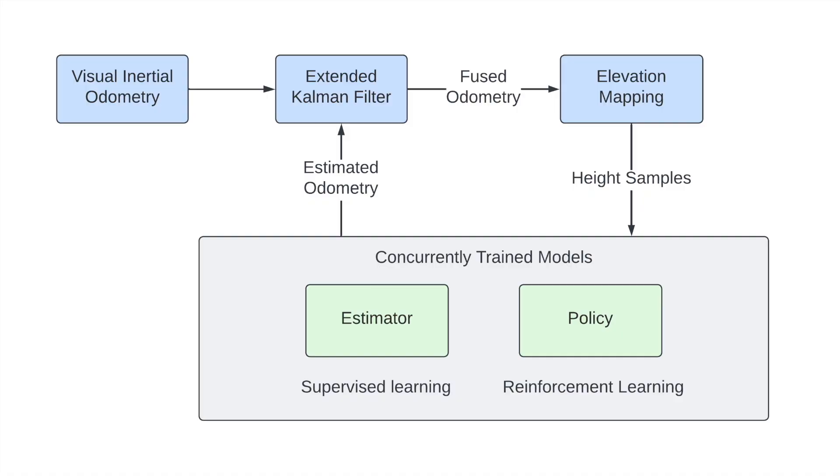To further enhance the position and velocity estimation, a sensor fusion method was implemented using a Kalman filter, fusing an odometry estimate from a visual inertial input. Finally, the position data and depth data are used to build an elevation map that is then fed back to the control policy.